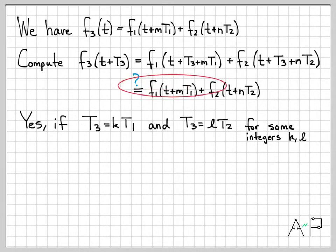In going from this line to this line, the observation is that I now need this to be a multiple of T1, so I'm going to call it kT1. I need to find some integer k, and then I need this to be some multiple of T2, and I'll call it lT2.